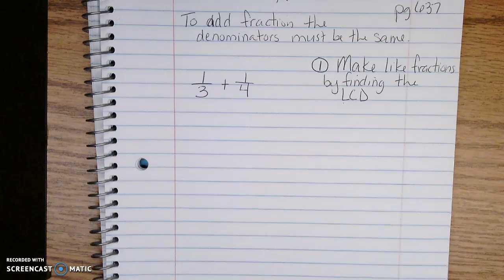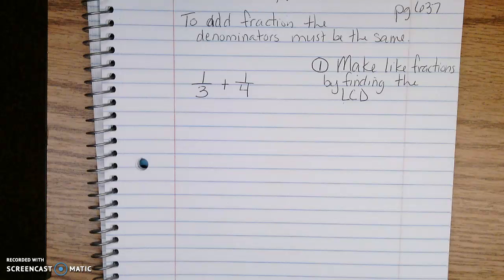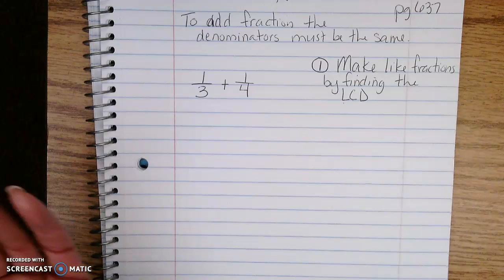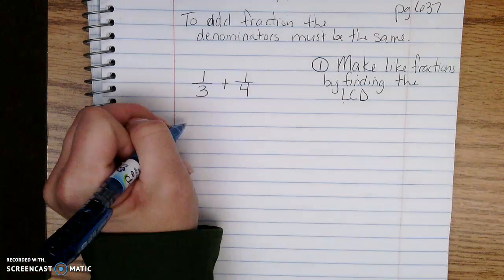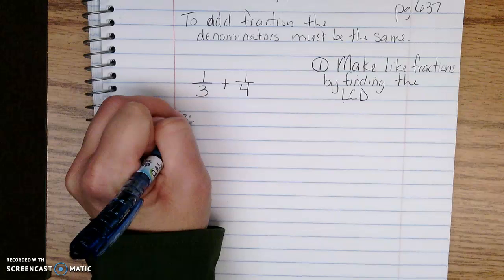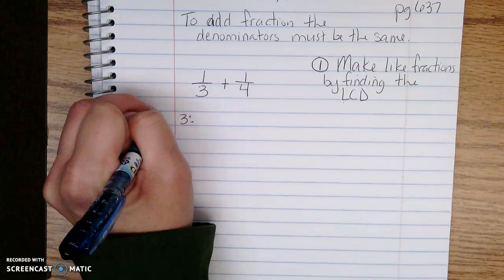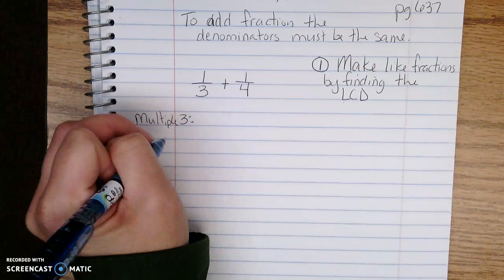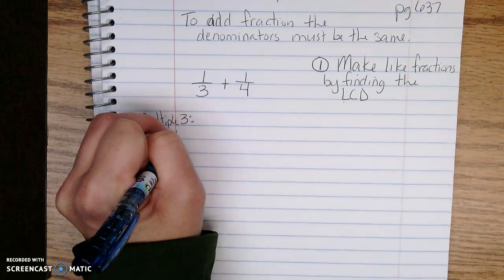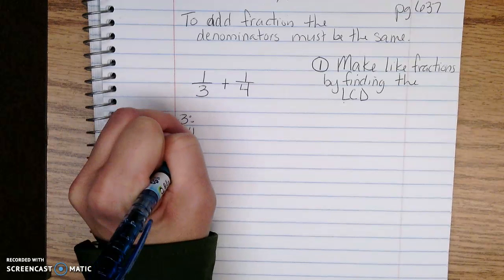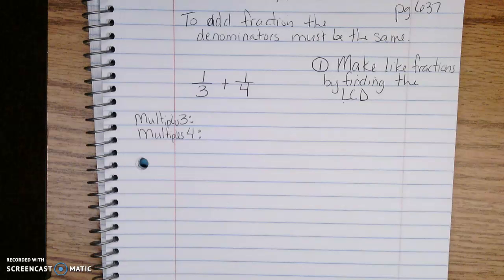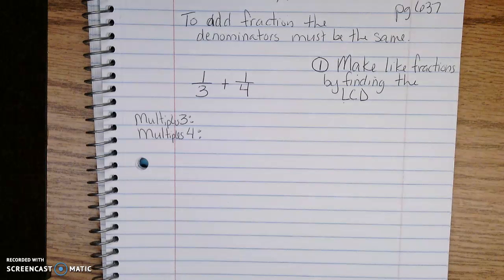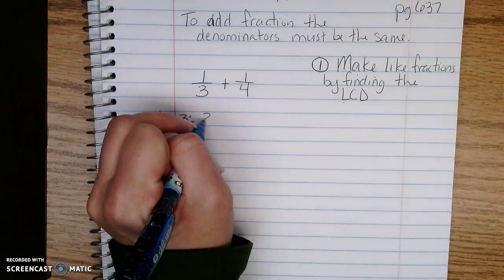Sometimes it works to find any common denominator if I'm having trouble finding the least common denominator. To find the least common denominator, I take my denominator of 3 and find the multiples of 3, then take my denominator of 4 and find the multiples of 4 until I find the least common multiple.